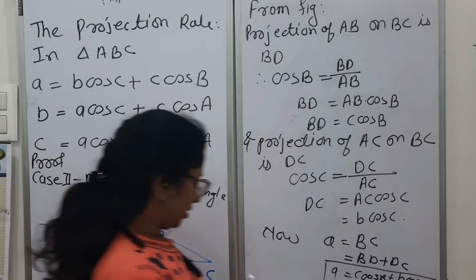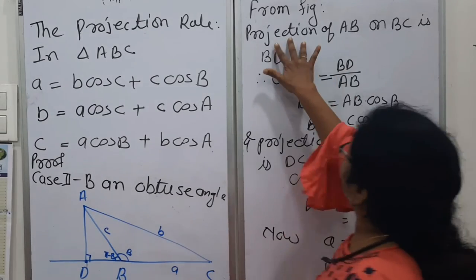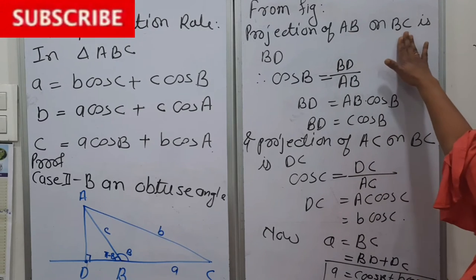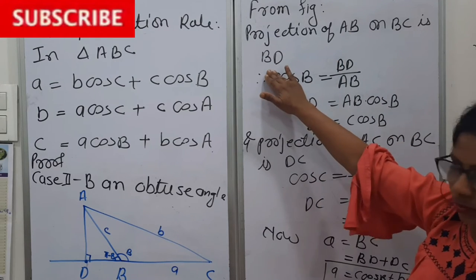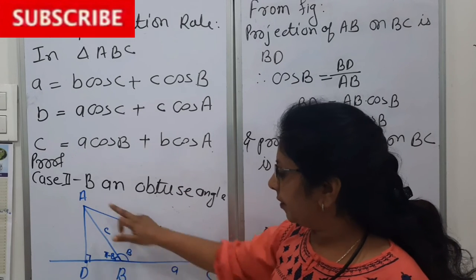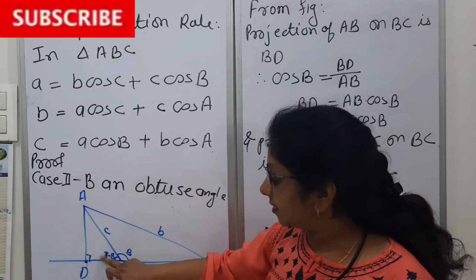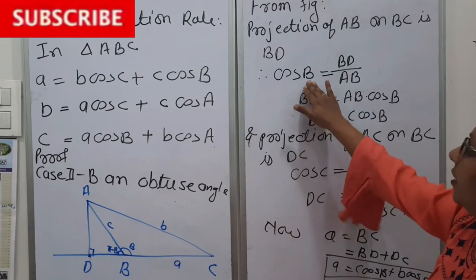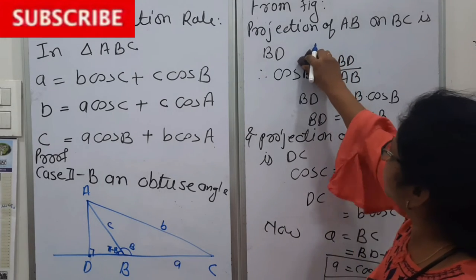So from figure, projection of AB on BC is BD. But now in this triangle we are working with ADB. Here this is 90 and this is π minus B, so instead of B we have to take π minus B.